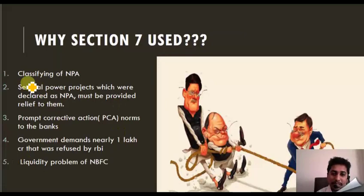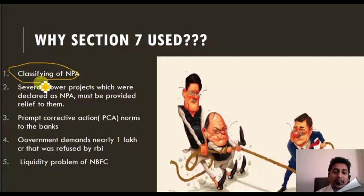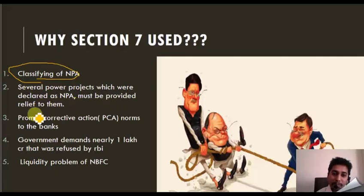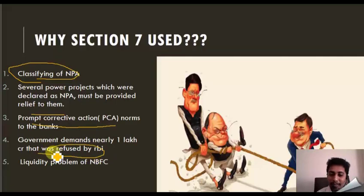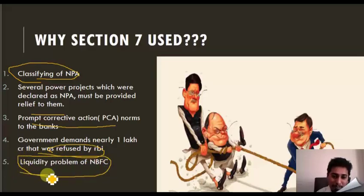Why was Section 7 used? One reason is the classification of non-performing assets — when banks are not able to collect back the loans that were issued, those are considered non-performing assets. Several power projects declared as NPA must be provided relief. Prompt corrective action norms also apply to banks. The government demands nearly 1 lakh crore, which was refused by RBI — this is an unofficial statement. The central government wanted 1 lakh crore as a loan but RBI refused. There is also the liquidity problem of non-banking financial companies.